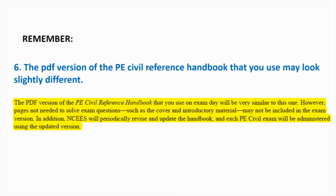The sixth point is that the PDF version of the PE Civil Reference Handbook you use may look slightly different. The Civil Reference Handbook does mention that the PDF version available on exam day will be very similar to the one on the NCEES homepage, but there is a chance some pages may be removed — such as cover pages, introductory material, or sections not needed for solving problems on the PE test. So it may look a little different, but it will be similar.